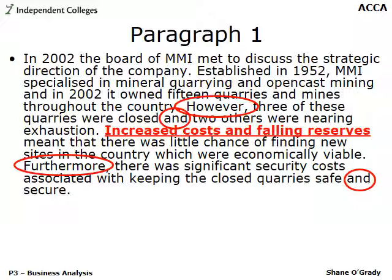The red underlined text is where you could name-drop PESTEL — noting that macro-environmental factors outside MMI's control forced them to diversify. You could also mention the product life cycle: MMI's current business of open-cast mining is at the decline phase, past maturity, which is why they were forced to take strategic action. These aren't in the examiner's sample solution but are valid theoretical frameworks — though they're subjective, they can earn marks if developed with sufficient depth.